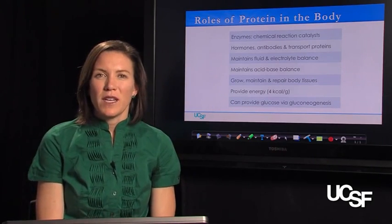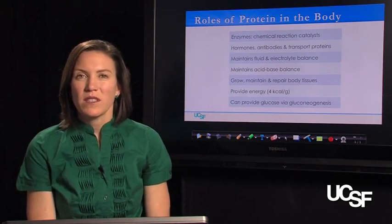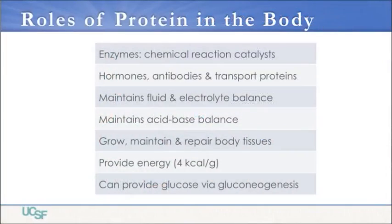What does protein do in our body? Protein does a number of things. The enzymes in your bodies that are required to make chemical reactions occur are actually proteins. Your hormones, antibodies, and transport proteins are all examples of proteins as well. Protein helps you to maintain your fluid and electrolyte balance, maintains acid-base balance, promotes the growth, maintenance, and repair of your body tissues. It also gives you energy — four calories per gram.